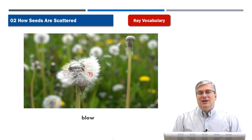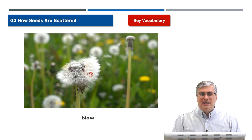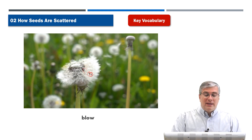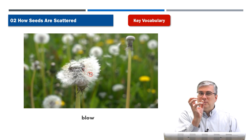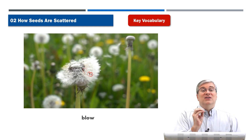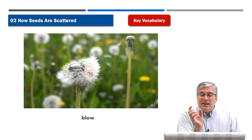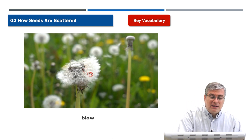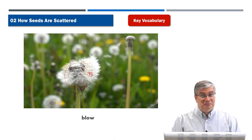By the way, it's very interesting that people say you can predict the weather by looking at the dandelion. If it's nice weather, the dandelion has a nice ball shape like we saw at the beginning of the video. But if there's high humidity and it's going to rain, the petals of the dandelion close up over the flower. So if you see that, you say oh, it's going to rain.